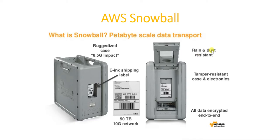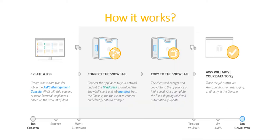The Snowball is rain and dust resistant, with a tamper-resistant case, and all data is encrypted. In countries other than the US there's only one variety — 80 terabytes — but in the US they have two types: 50 terabytes and 80 terabytes. It also has an e-ink shipping label. So if you want to transfer 80 terabytes of data, you can order one from AWS and they'll send it to you.